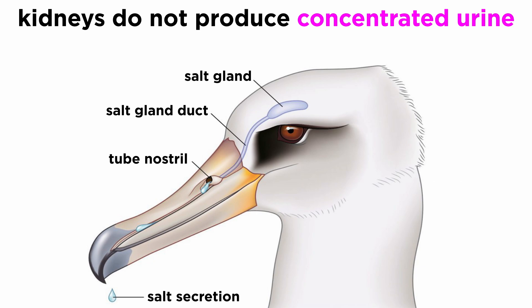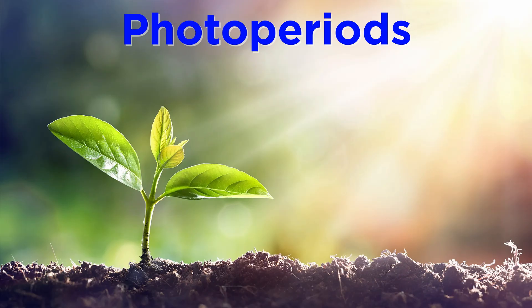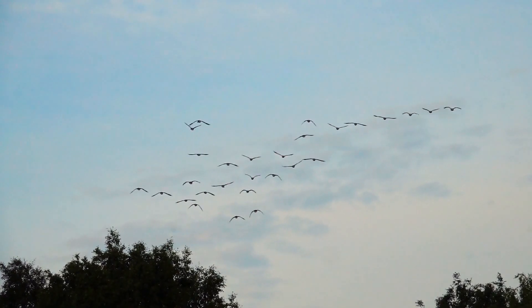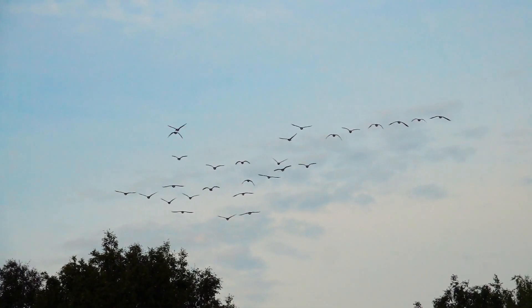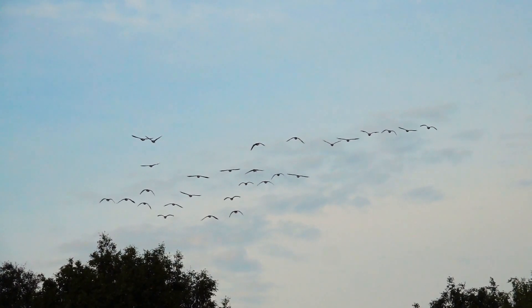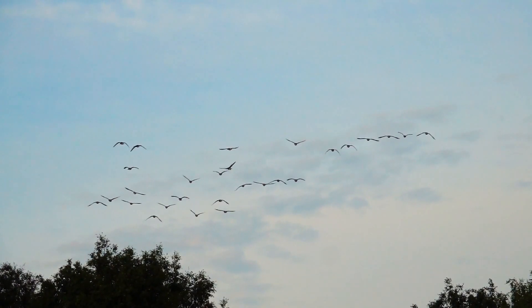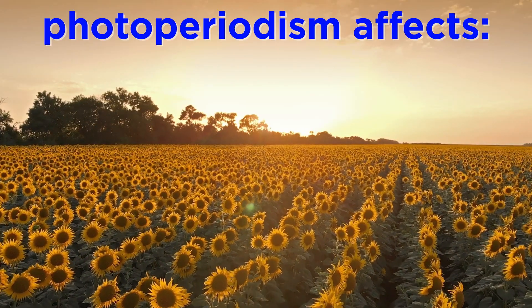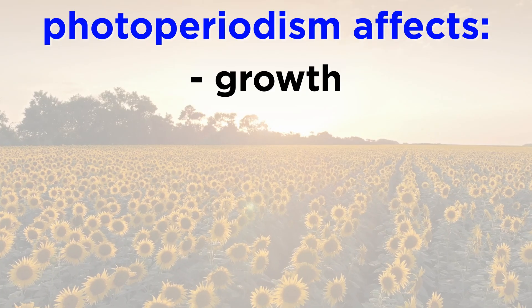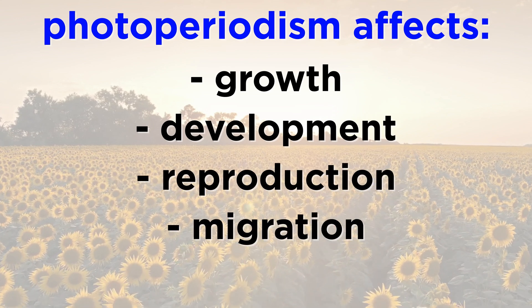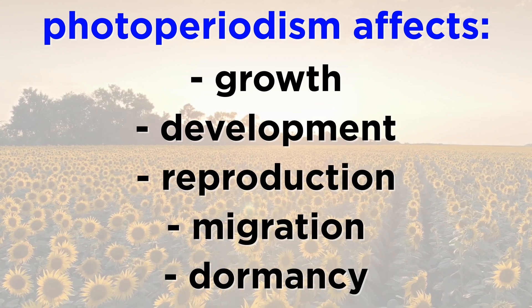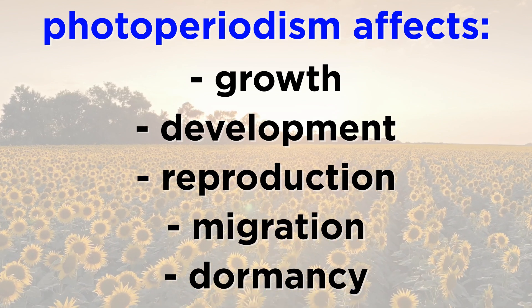Salt glands are important accessory organs of salt excretion in these animals because their kidneys cannot produce a concentrated urine as mammalian kidneys do. Lastly, let's examine photoperiods. Photoperiodism is the ability of plants and animals to measure environmental day length, or photoperiod, a process that underlies the so-called biological calendar. The biological ability to measure day length permits organisms to ascertain the time of year and engage in seasonally appropriate adaptations. Photoperiodism orchestrates such seasonal activities as growth, development, reproduction, migration, and dormancy that make a direct contribution to survivorship and reproductive success.